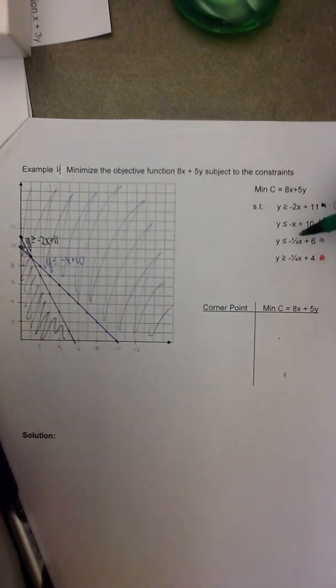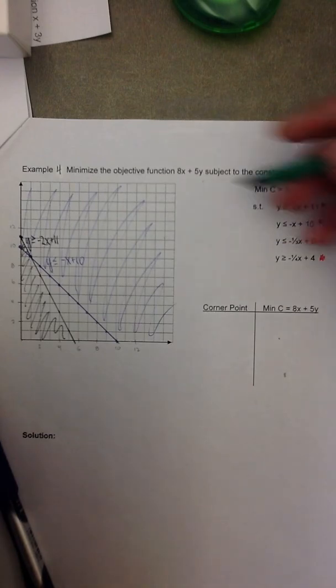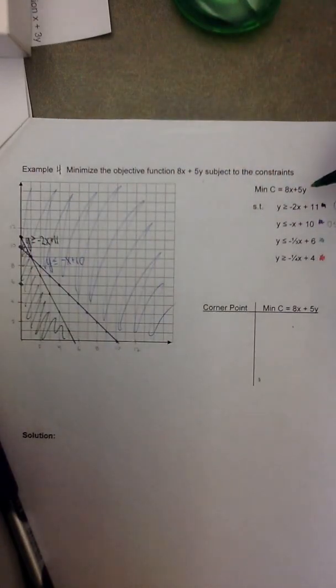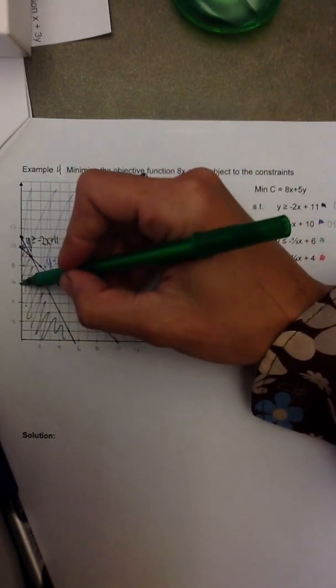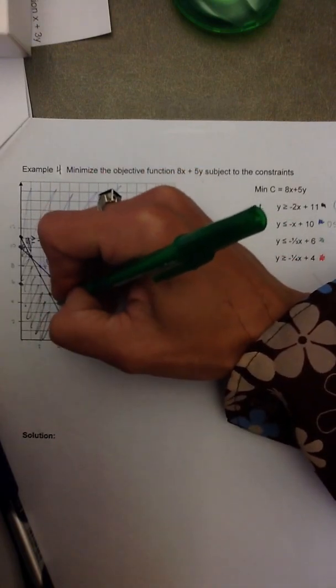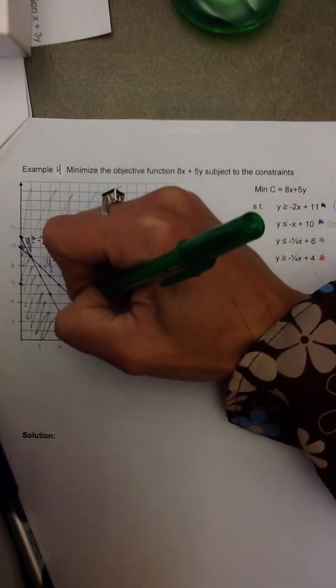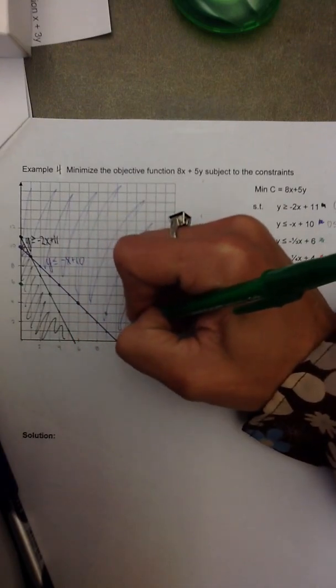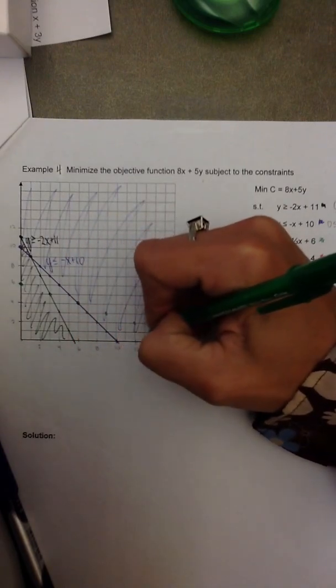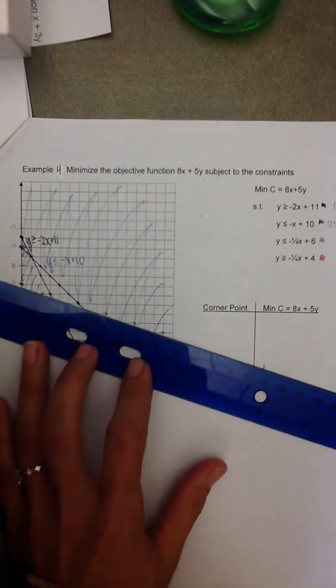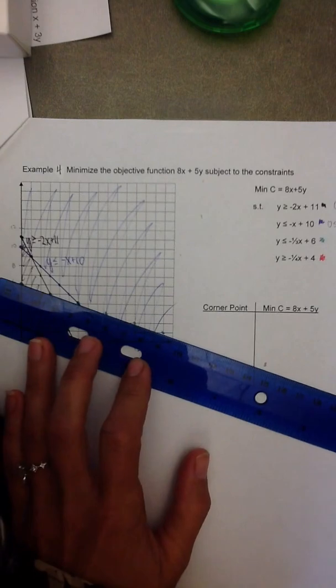Moving on to the third inequality. Y is less than or equal to negative 1 third x plus 6. That has a y-intercept of 0,6, and a slope of negative 1 third. So from here I move down one and right three. Oh, look at that. I like when they cross like that. And again, I will continue this pattern until I don't find it necessary anymore. Use my straight edge to connect the dots.